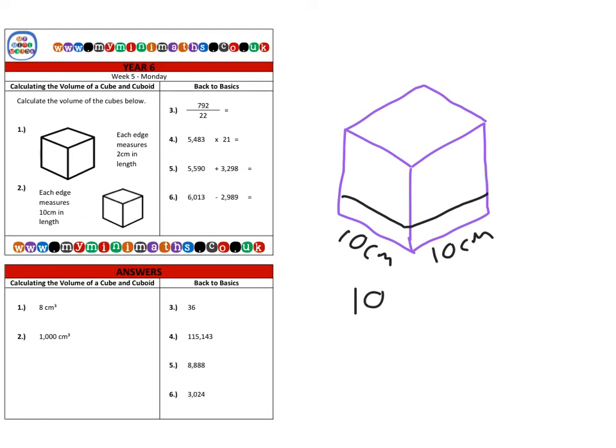So that's ten by ten, which is one hundred centimeters cubed. And because we have a height of ten as well, there are ten layers of one hundred, so we're multiplying this by ten again.